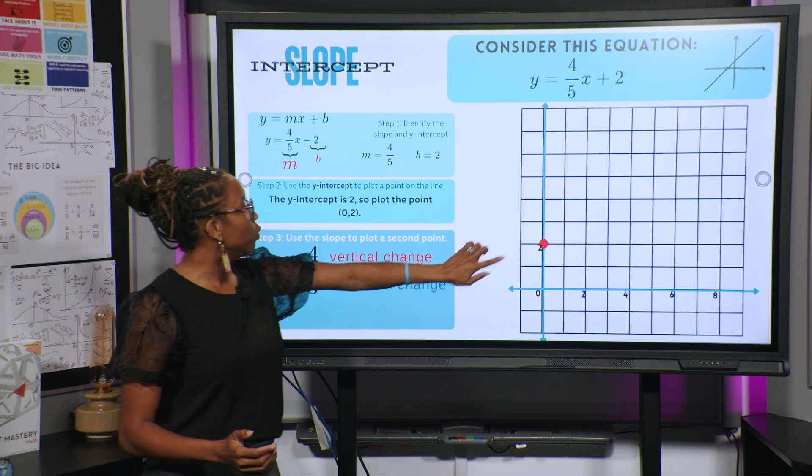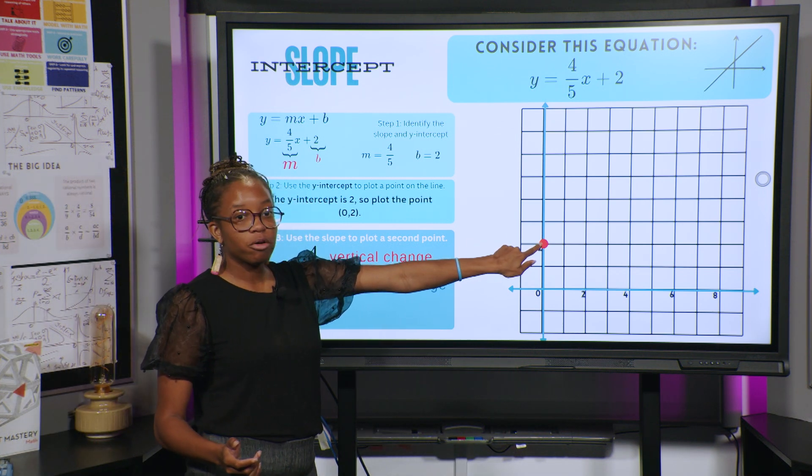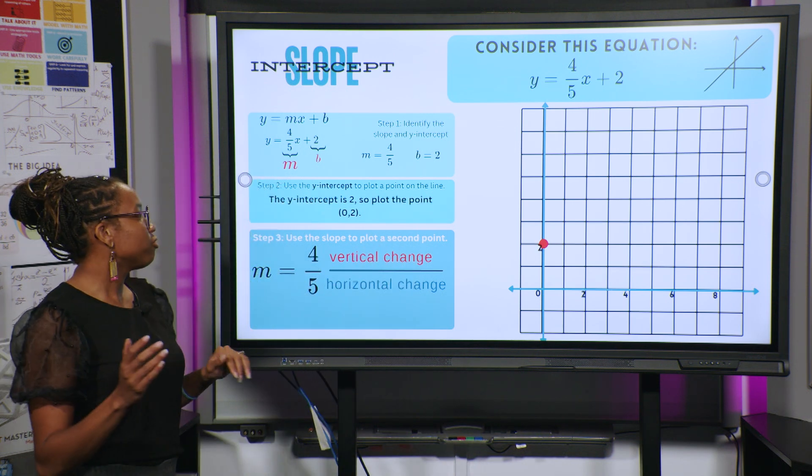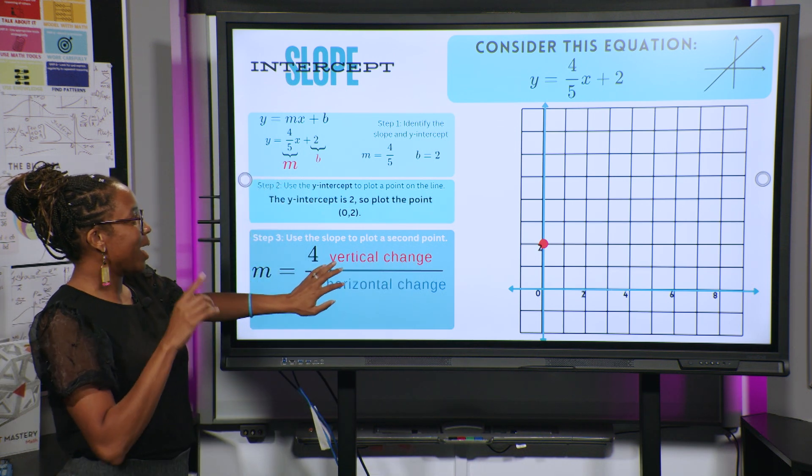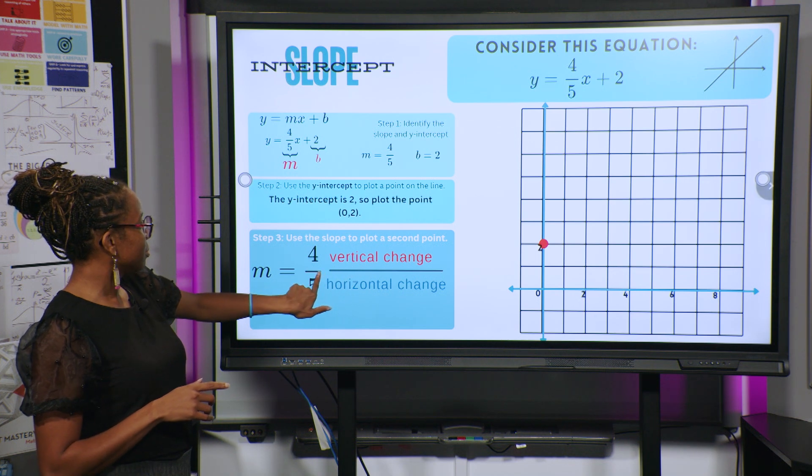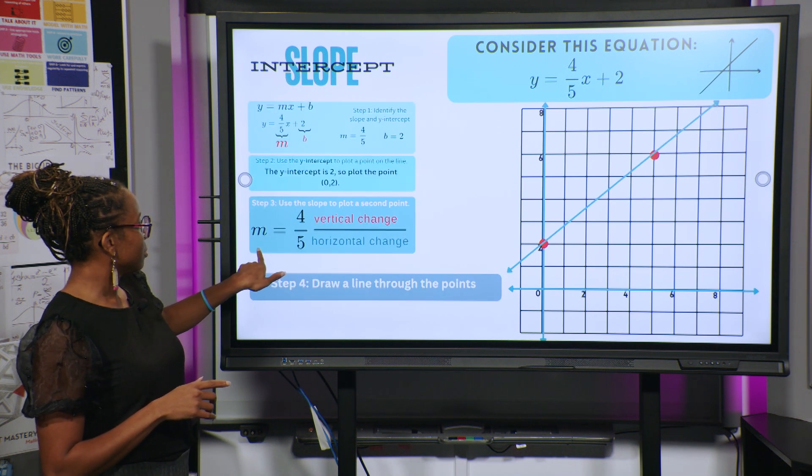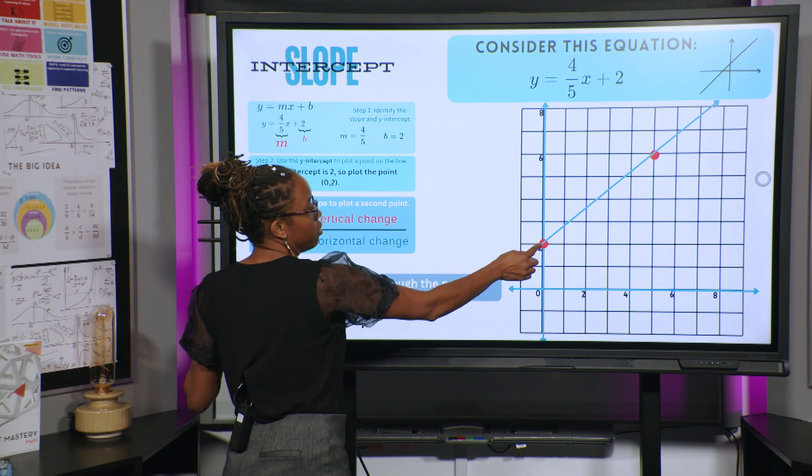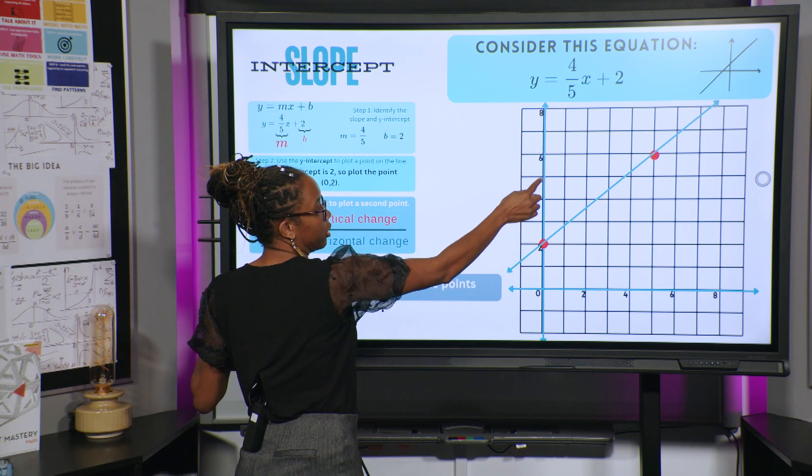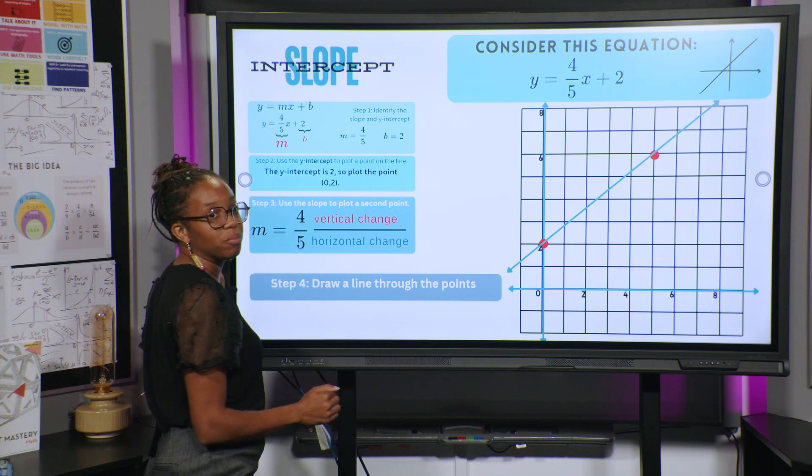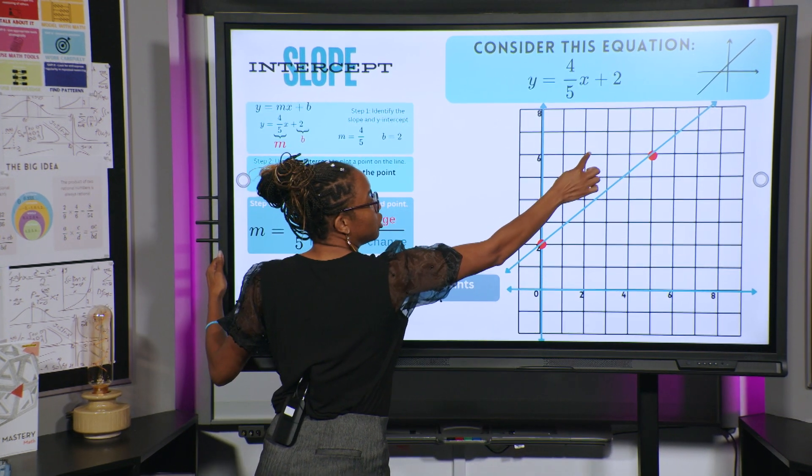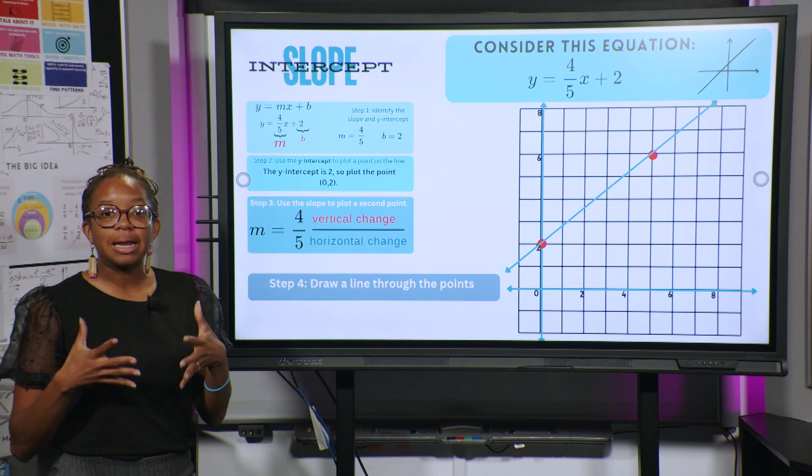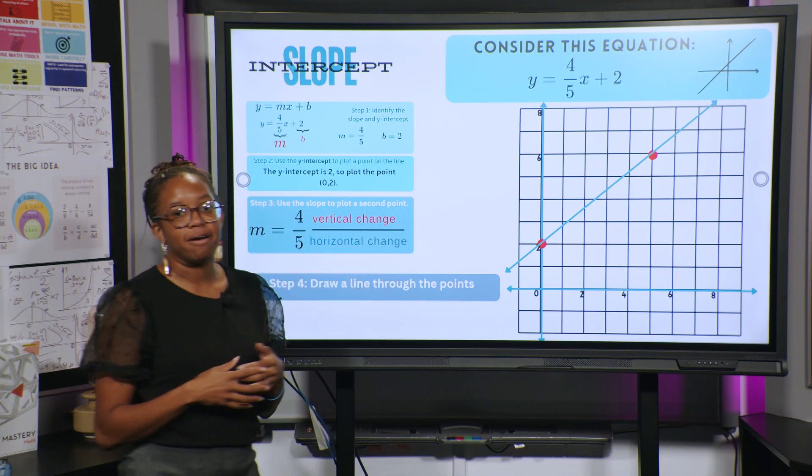Therefore, we should be moving up 4 from 2, and we should move 5 units to the right from that y-axis. So if we look here, we've moved up 4 units, 1, 2, 3, 4, and we've also moved 5 units to the right, 1, 2, 3, 4, 5. The only thing now is to draw a line through those points, which is what we have here.